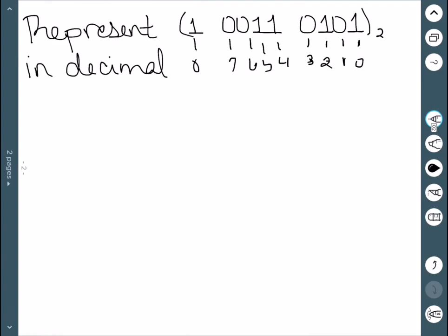So this is 1 times 2 to the 8th. I have a 0, 2 to the 7th, and a 0, 2 to the 6th. I then have a 1, 2 to the 5th. I have a 1, 2 to the 4th. I have a 0, 2 to the 3rd.